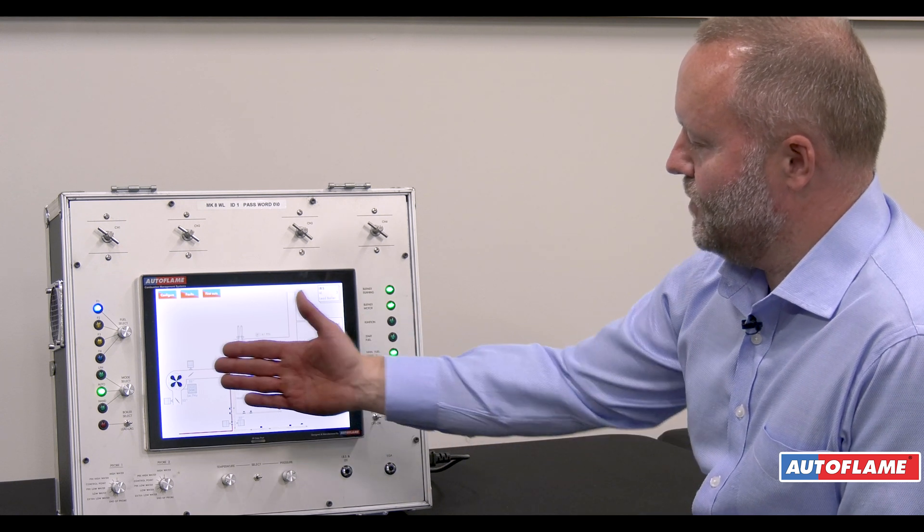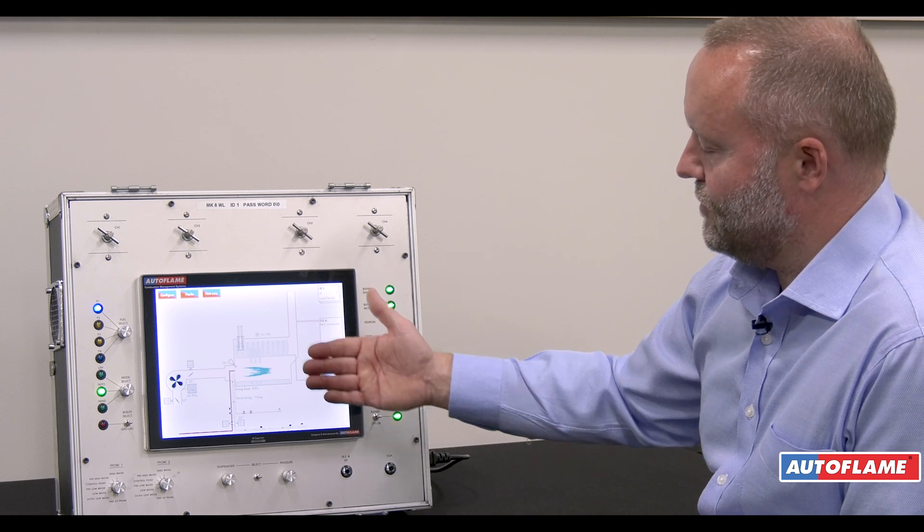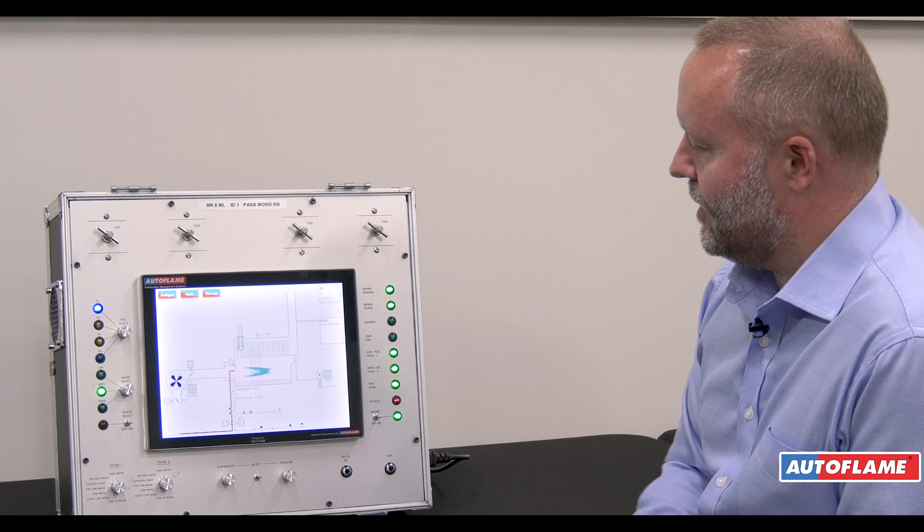Now by using those two mass flow meters that is going to give us exactly the right fuel to air ratio at each point on the firing curve.